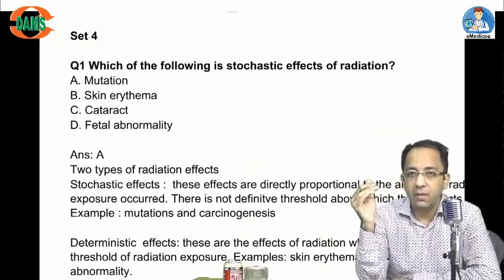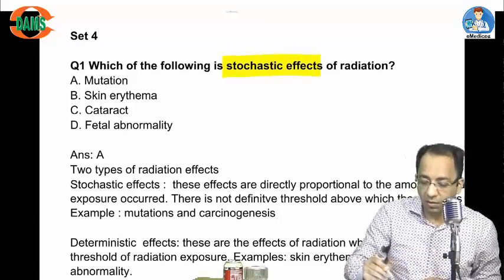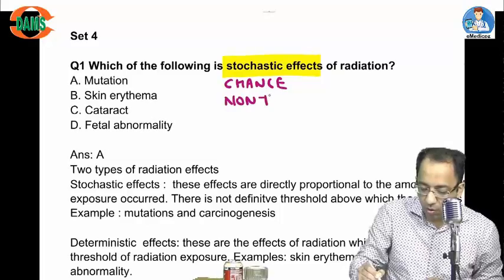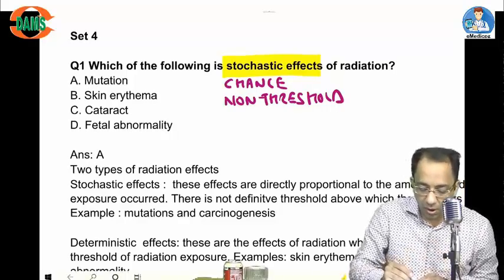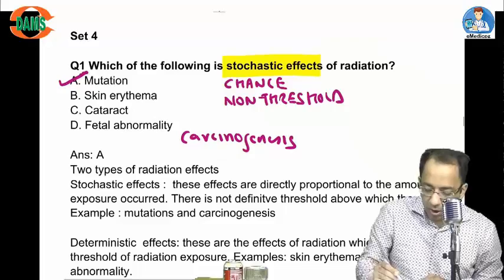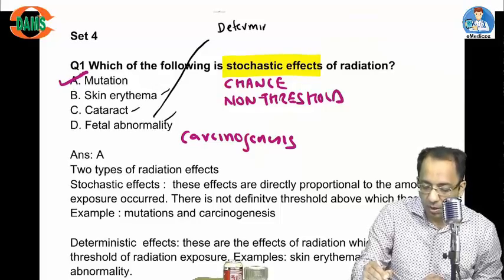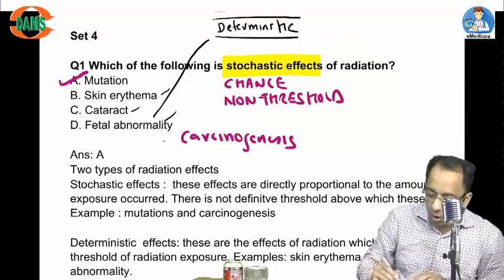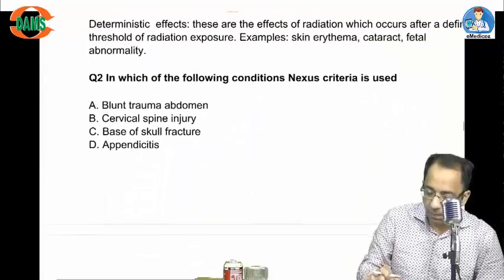Real exams are always more doable — just apply it. For example, 'which of the following is a stochastic effect of radiation?' Stochastic means chance or non-threshold effect — effects which have no threshold for happening. Examples include genetic mutations and carcinogenesis. On the other hand, skin erythema, cataract, and fetal abnormality have a threshold, so they are called deterministic or non-stochastic effects. Mutations and carcinogenesis are the two most important stochastic effects of radiation.